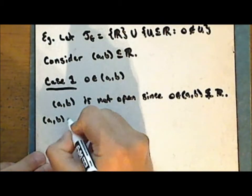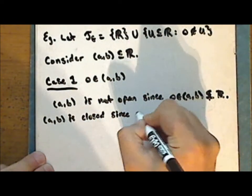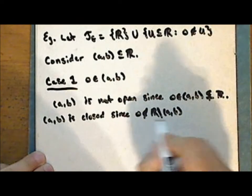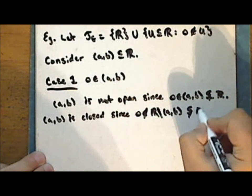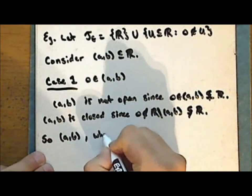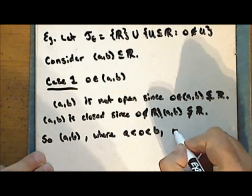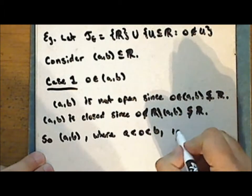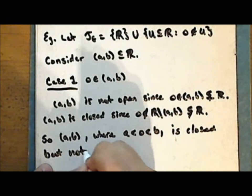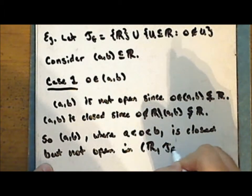The interval from a to b is closed, since zero is not in the complement of this interval and the complement of this interval is a proper subset of the reals. And so the interval from a to b, where zero occurs somewhere between the real numbers a and b, is closed but not open in the space of the reals with the excluded point topology.